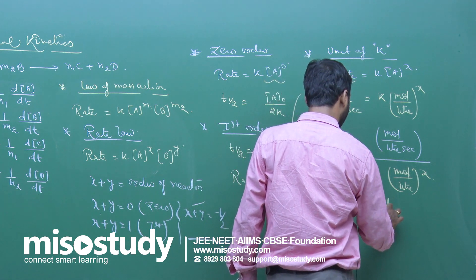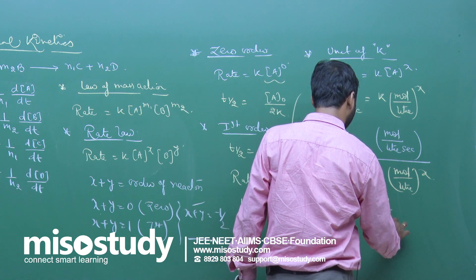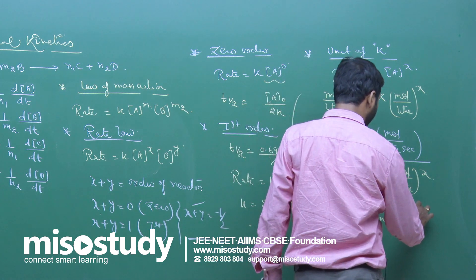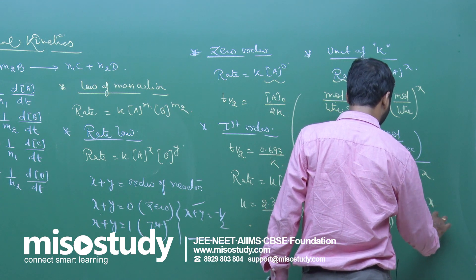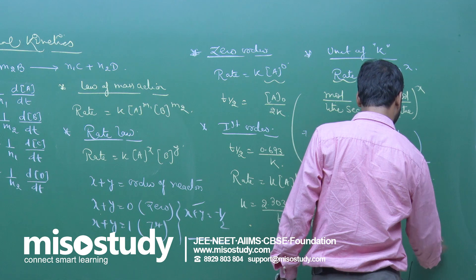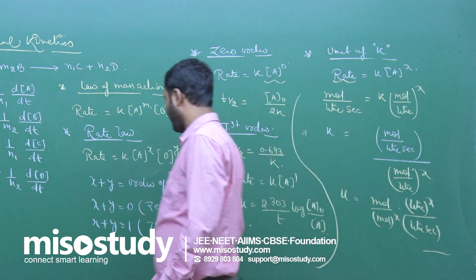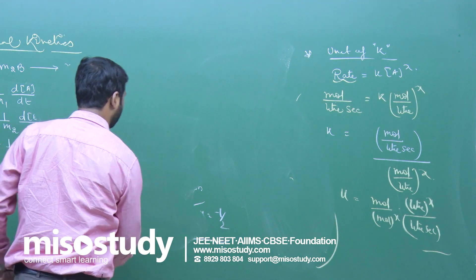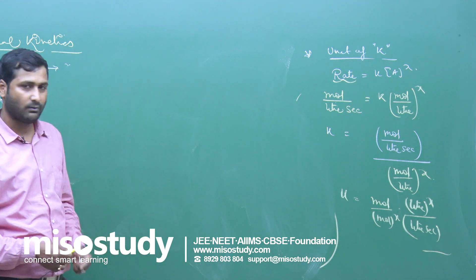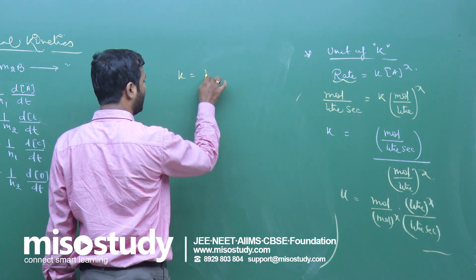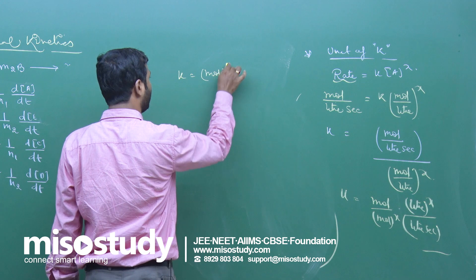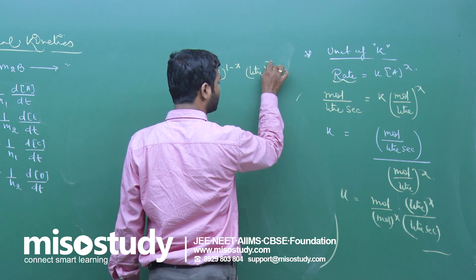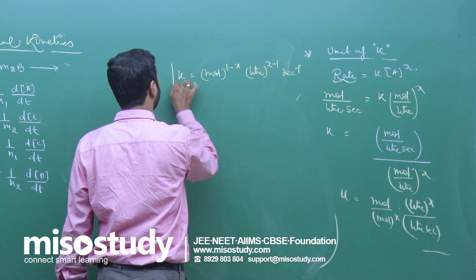Simplifying, k = mol^(1−x) × L^(x−1) × s⁻¹. For zero order (x = 0): unit of k is mol/L/s. For first order (x = 1): unit of k is s⁻¹, since 1 − 1 = 0 and x − 1 = 0.